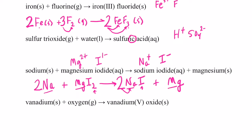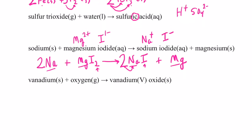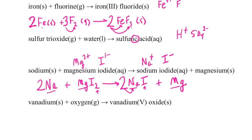Putting two in front of NaI changes sodium to two on the product side, so I put a two in front of sodium on the reactant side. That balances the equation.